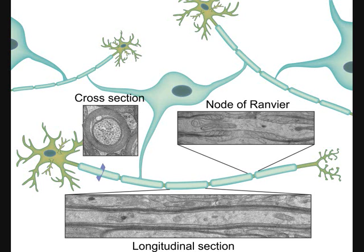The main function of myelin is to insulate the axon and to restrict the generation of the action potential to the nodes of Ranvier, which is the basis for the fast saltatory conduction in the brain.